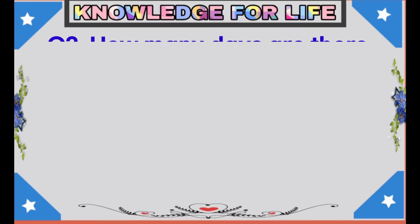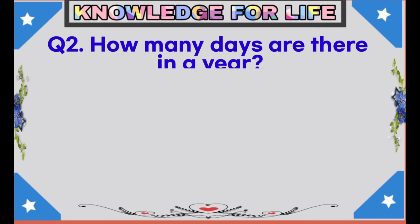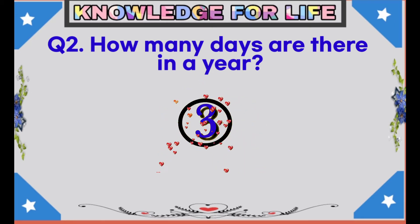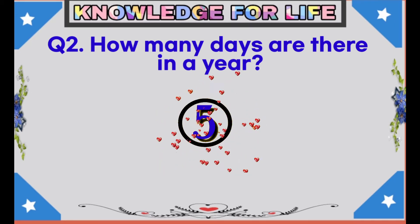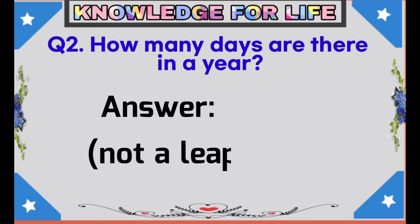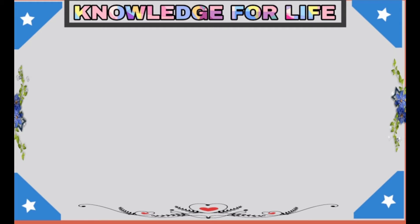Question number 2: How many days are there in a year? Answer: 365 days — not a leap year.